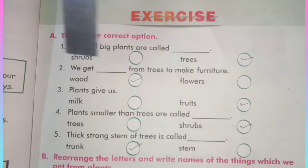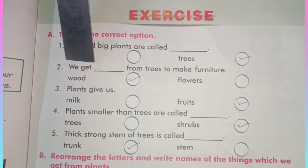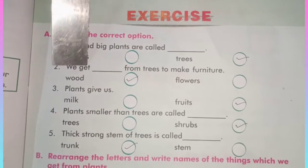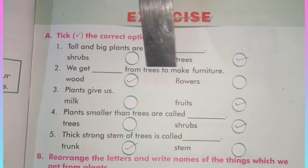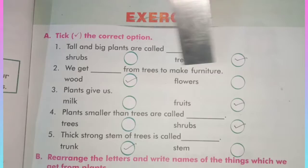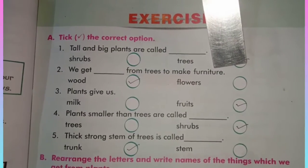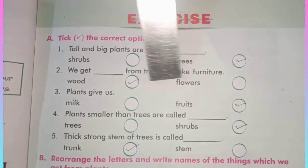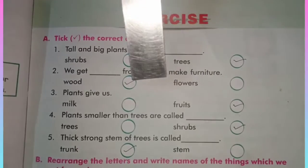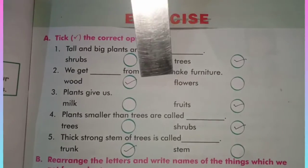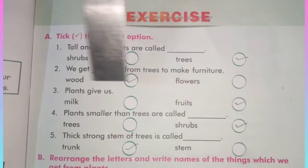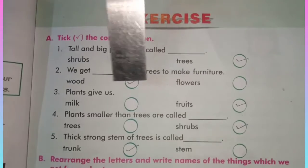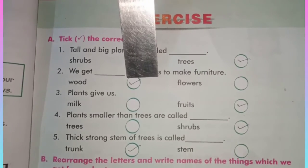Our next question is: We get blank from trees to make furniture. There are two options here. Which is the correct option students? Wood or flower? Wood is the correct option.